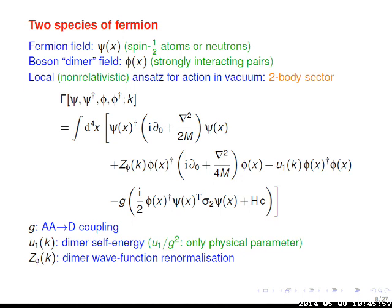Including a kinetic term for the bosons allows us to keep some of the energy dependence associated with them, which we would miss with a purely local energy-independent contact interaction. One can see the underlying four-Fermi origin because there's actually only one combination of couplings that appears in any physical observable — the ratio of the dimer self-energy to the square of the boson-fermion coupling g — exactly what you'd expect from the Hubbard-Stratonovich picture. G is arbitrary because it only appears in ratios with U1 or Z.